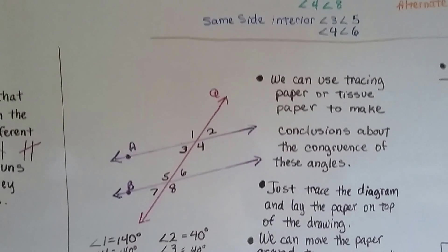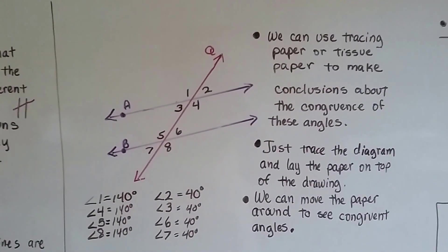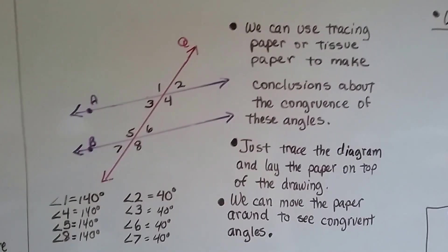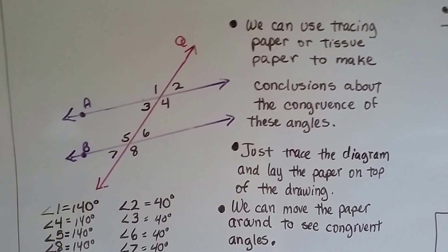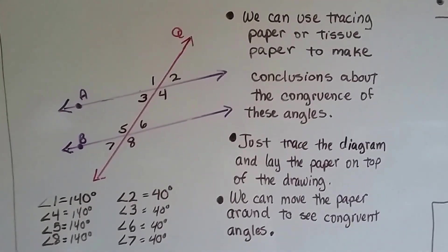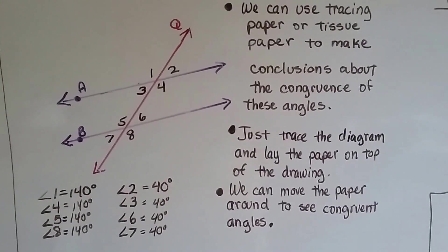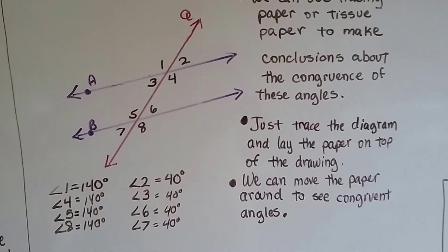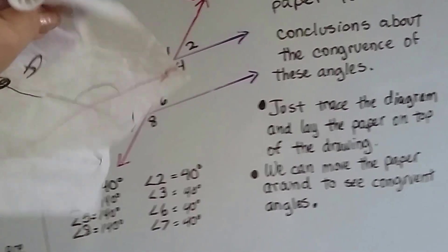So we can use tracing paper or tissue paper, like gift wrapping tissue paper, to make conclusions about the congruence of these angles. Just don't use tissue toilet paper, because that's going to fall apart on you. So what we can do is take a piece of tissue paper like this that you can see through.